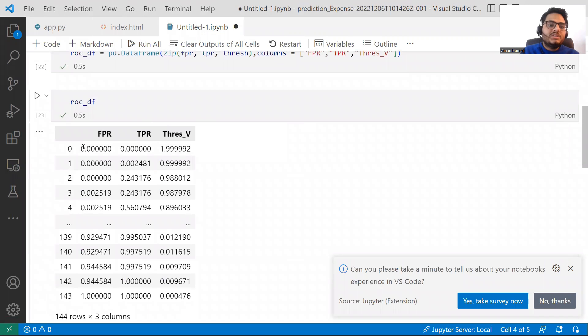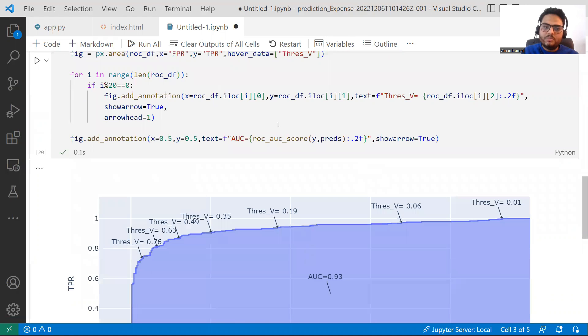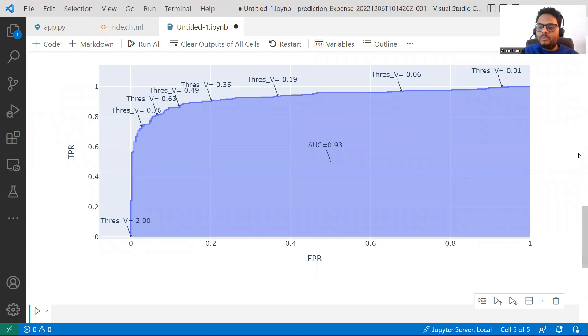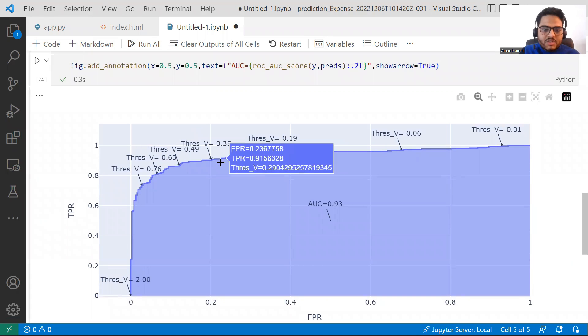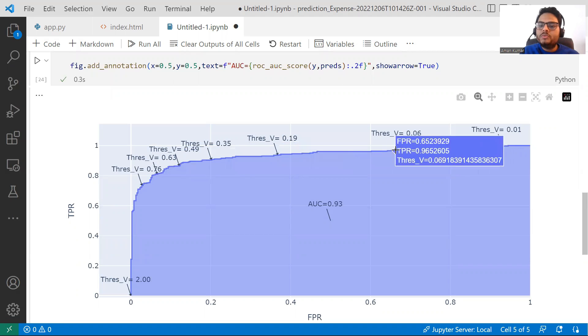If you see here, I am saying FPR, TPR, and threshold is equal to ROC curve Y pred. So all these three things sklearn will give you: threshold, FPR, TPR. Now I am creating a ROC data frame. This is my ROC data frame. This data frame tells you at this FPR and this TPR, this is the threshold. At the moment you change your threshold, your FPR and TPR starts changing. So all those combinations I have put in this data frame.